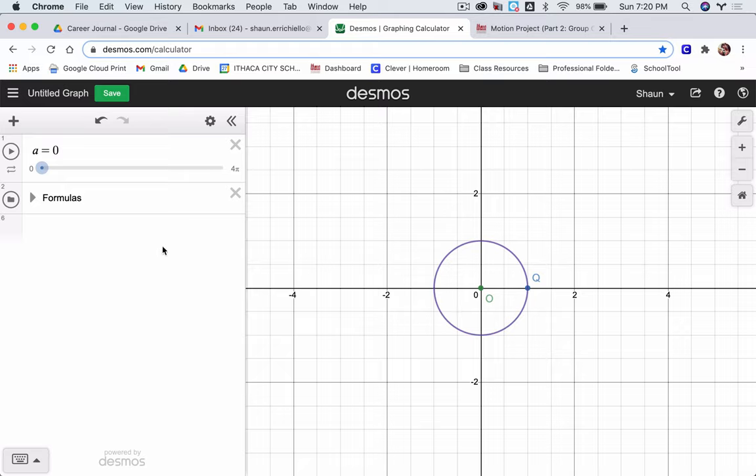In this video I want to create a point R that always has the same height as Q. R travels up and down with Q to help form a right triangle.